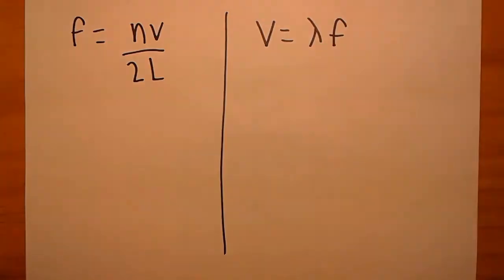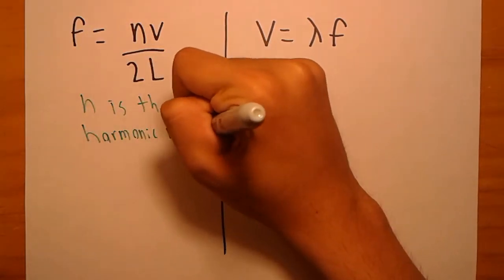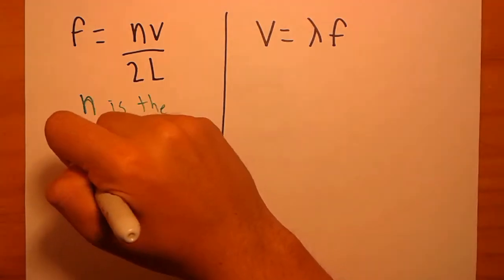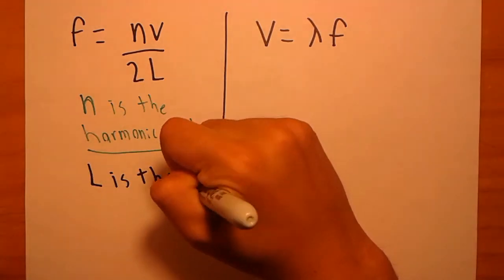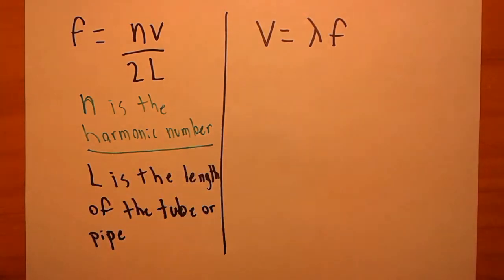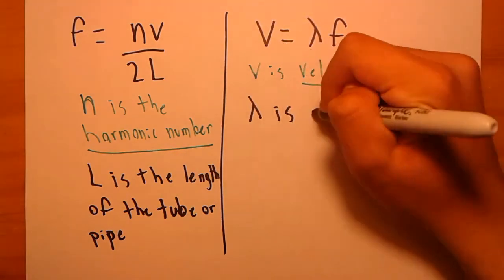According to the formula for the frequency of a wave in an open-open tube, like the recorder, the frequency is equal to the harmonic number, or n, times the velocity divided by two times the length of the tube or pipe. Moreover, the formula velocity equals wavelength times frequency also is useful in explaining what happens. The velocity remains constant as it is only dependent on the medium it's traveling through, the temperature, and the pressure.